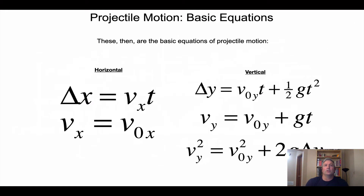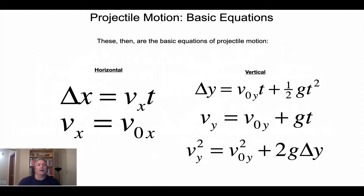This simplifies our formulas significantly. Horizontally, there is never any acceleration, so horizontal velocity stays constant — vx equals v-zero-x, essentially an identity. The one formula we use for horizontal motion is basically the average velocity formula: delta-x equals vx times t. Vertical motion still uses the same one-dimensional constant-acceleration equations, with that constant acceleration being g, allowing us to find vertical displacement or final vertical velocity from time.